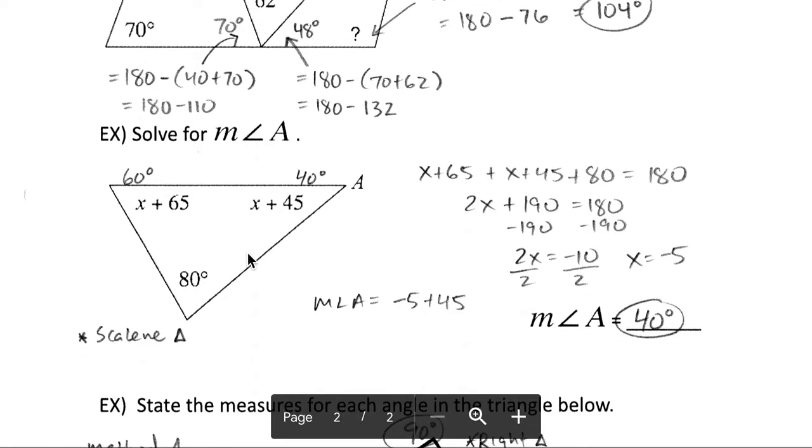In this next example, somewhat the same, except now we want to actually solve for x first, so that we could get the measure of angle A. So taking our three measures here, combining them all together, combining any like terms, setting it equal to 180. We got x and x as 2x. 65, 45, and 80 is going to give us 190. Subtract what we know and divide by 2.